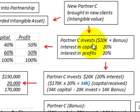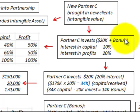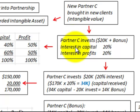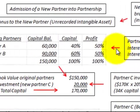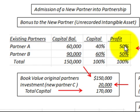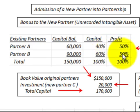Partner C is going to invest $20,000 to come into the partnership, and the existing partners are going to offer them a bonus. The new partner C is going to get an interest in capital of 20% and an interest in profit of 20%.